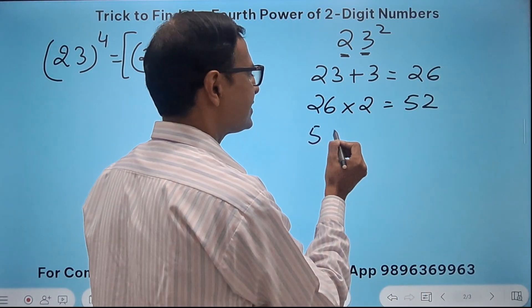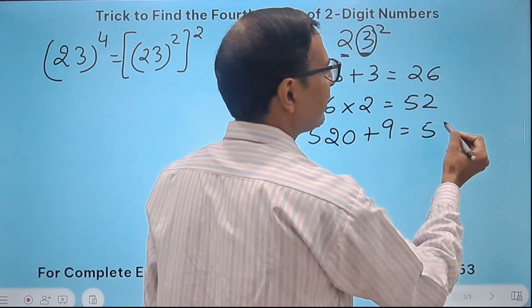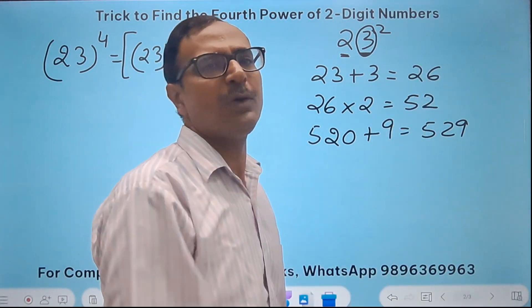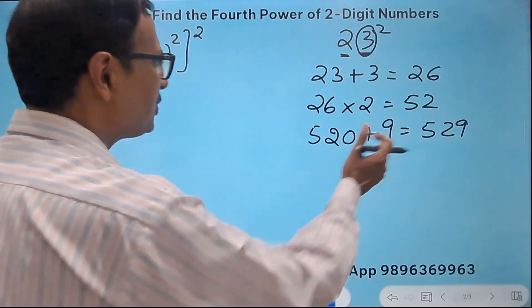I will put a 0 with 52 and add 3 square, that is 9, to the result I will get 529. Now this method of squaring is really really useful and you know you won't find it anywhere. So 529.